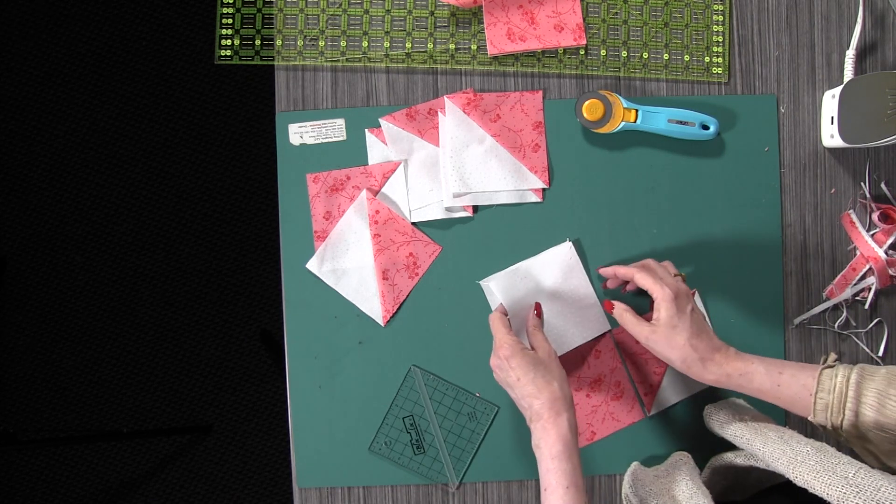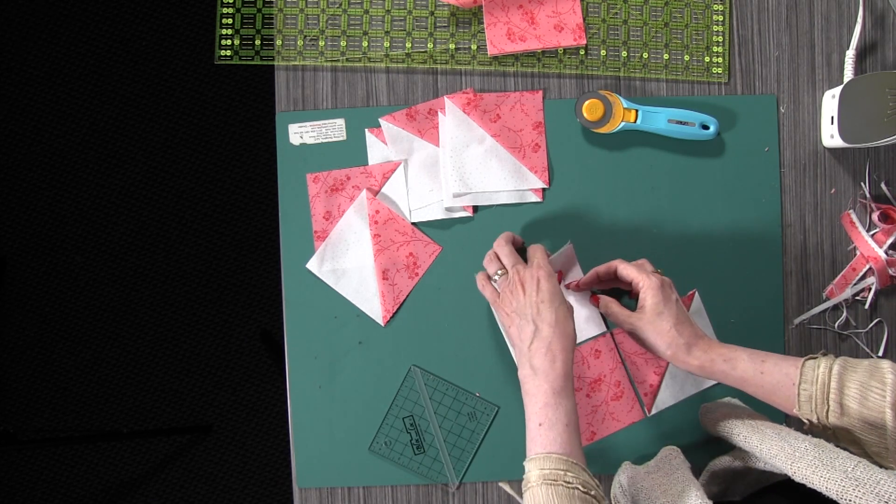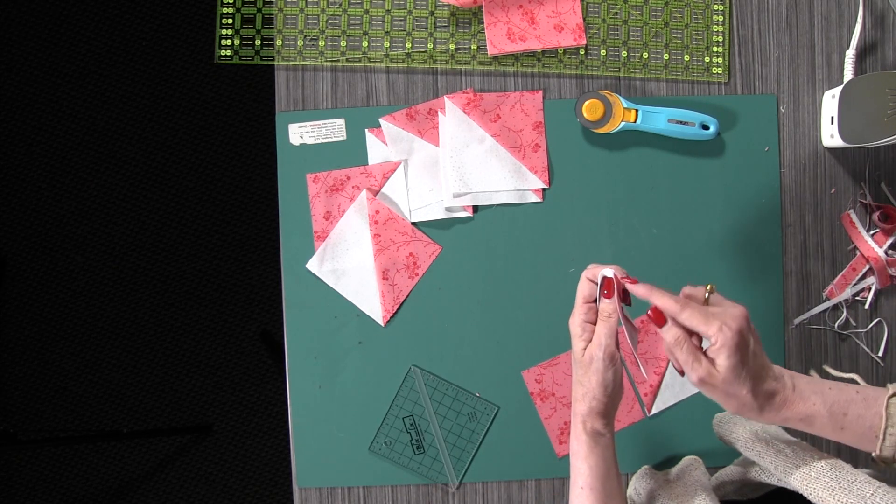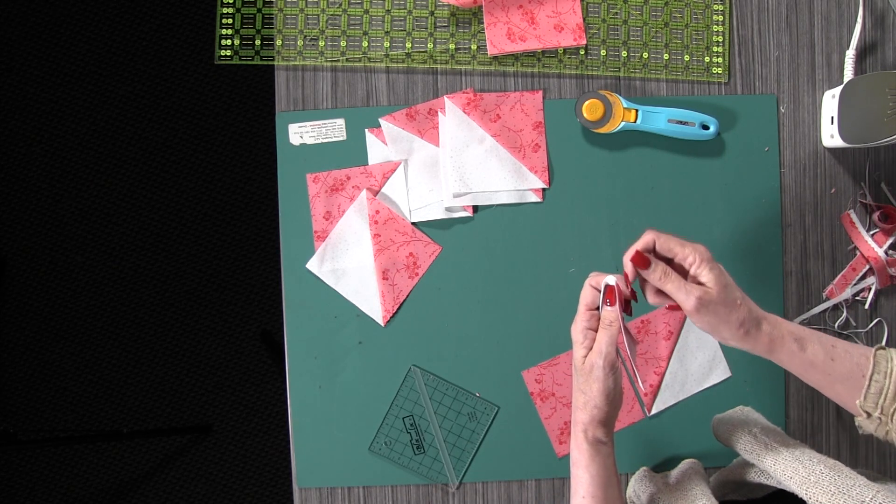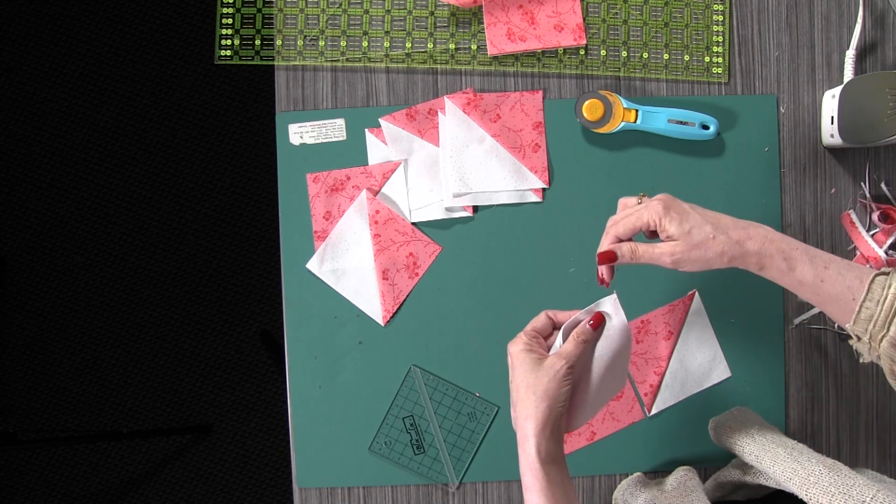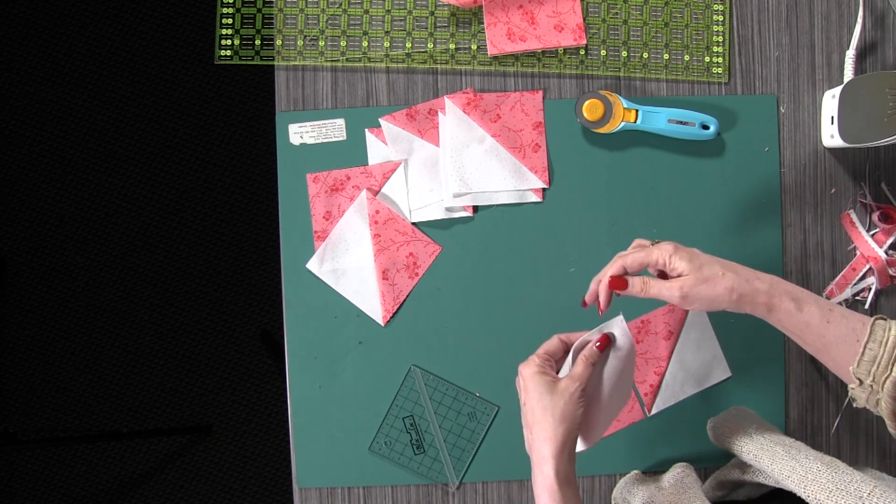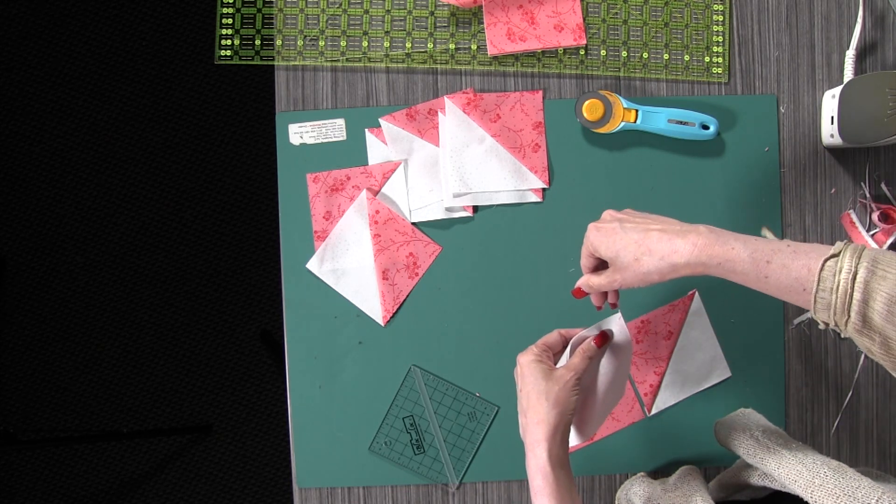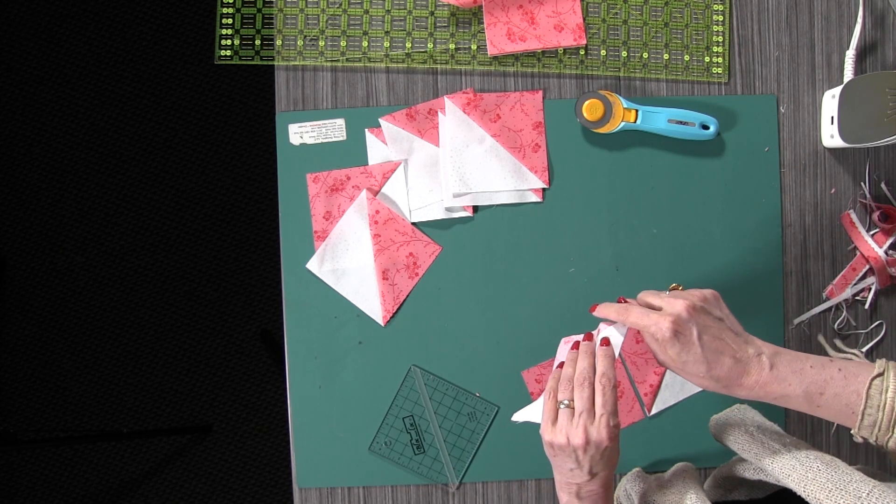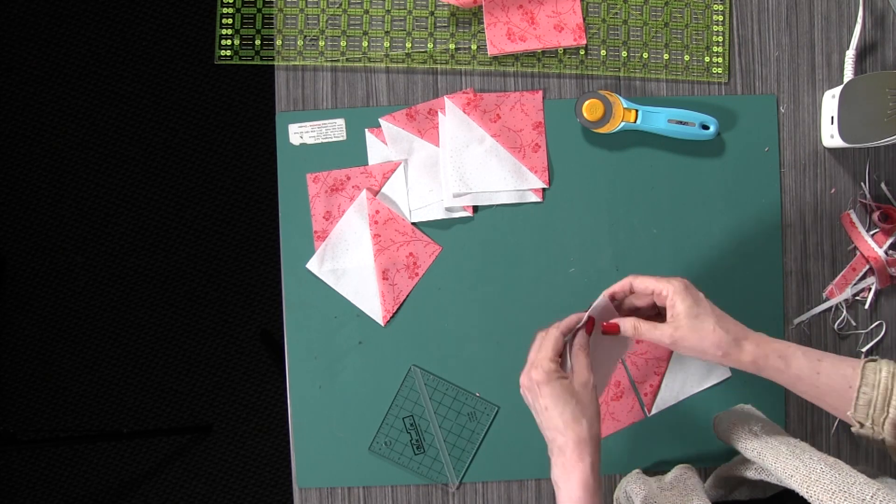The other thing I want to make sure that everyone understands, this is a trick I learned a long time ago, is that you can see here that the seam of the half square triangle is going down. You want to run that through your sewing machine this way. You want to run it through, so here's your foot, you want to run it through this way so that you're going into the seam of the half square triangle.